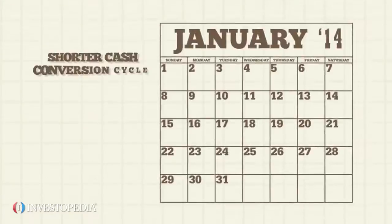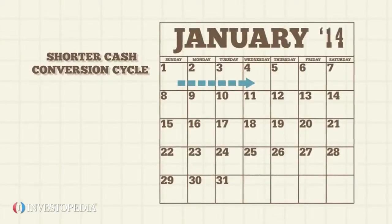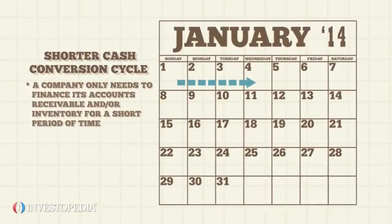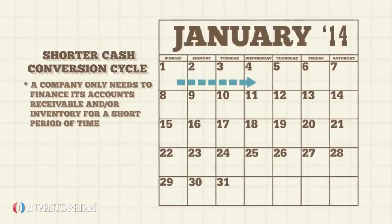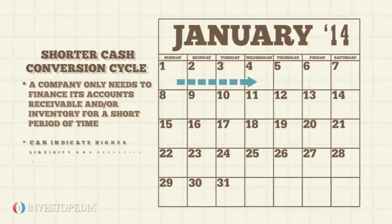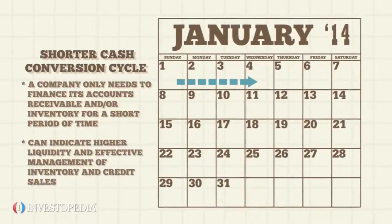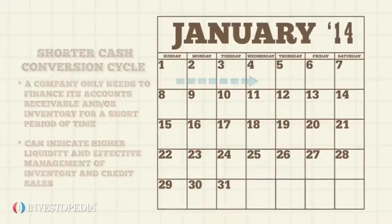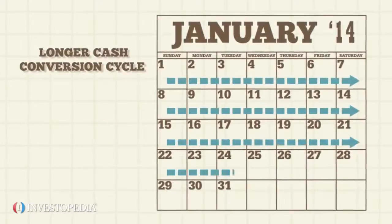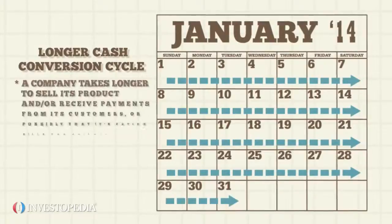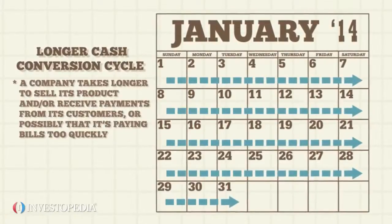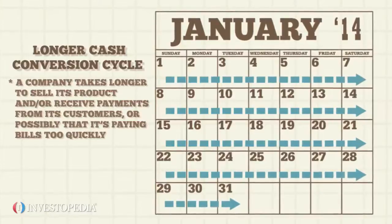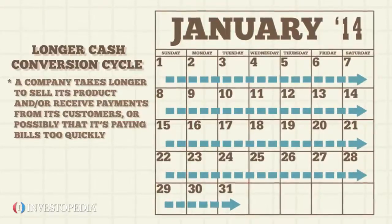Usually, a shorter cash conversion cycle means a company only needs to finance its accounts receivable and/or inventory for a short period of time. This can indicate higher liquidity and effective management of inventory and credit sales. A longer cash conversion cycle indicates a company takes longer to sell its product and/or receive payments from its customers, or possibly that it is paying bills too quickly.